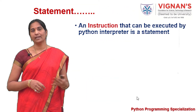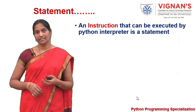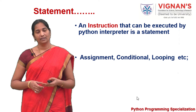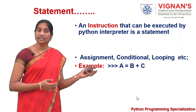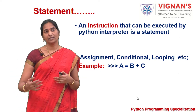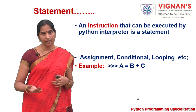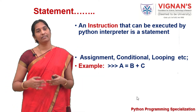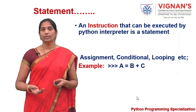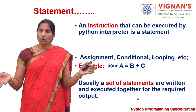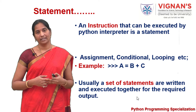A statement is an instruction that can be executed by a Python interpreter when it comes across it. For example, you can consider A = B + C as a Python statement. When a Python interpreter sees these kinds of statements, it starts executing and produces the output. A Python statement could be an assignment statement, a conditional statement, a looping statement, a function header, or some other statement. Usually these kinds of statements are grouped together and executed together to achieve a particular task.